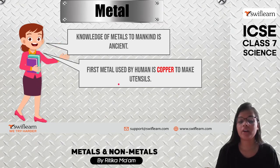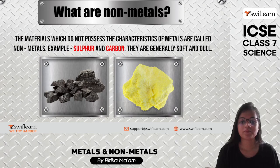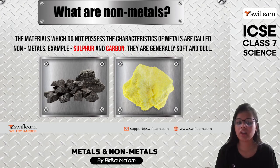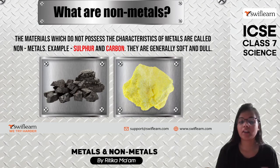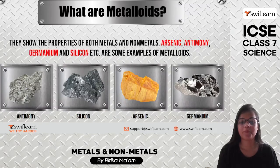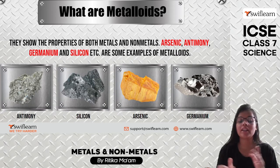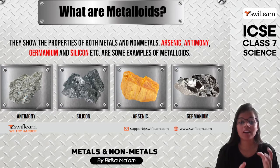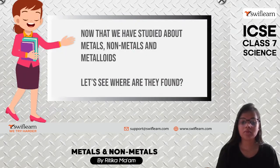Nonmetals do not have the characteristics of metals. They are not always shiny, they don't have metallic luster, and they are not malleable or ductile, though there are some exceptions. Examples of nonmetals include sulfur, carbon, and oxygen. They are soft and dull. Metalloids have properties that lie between metals and nonmetals — examples are germanium, silicon, antimony, and arsenic.